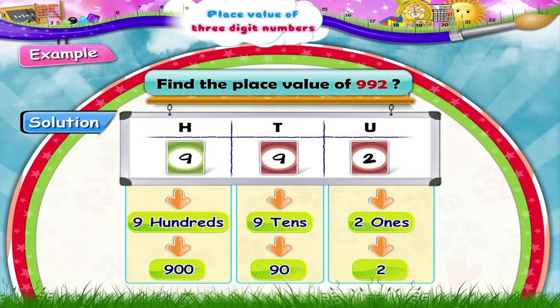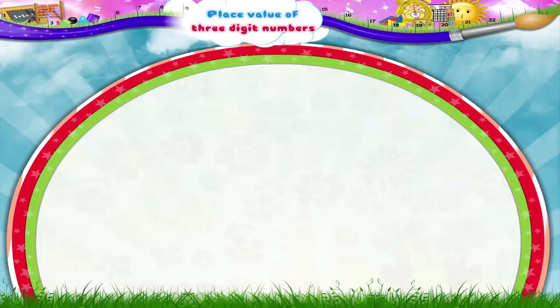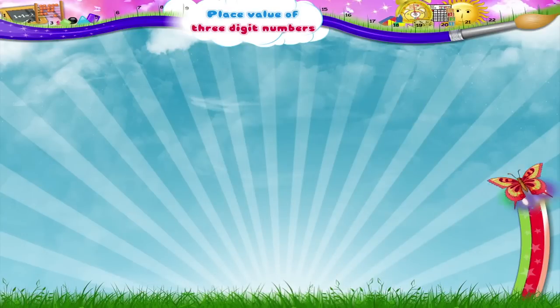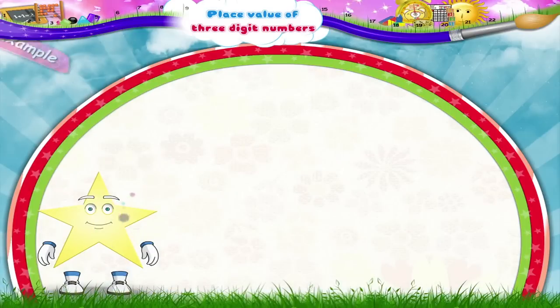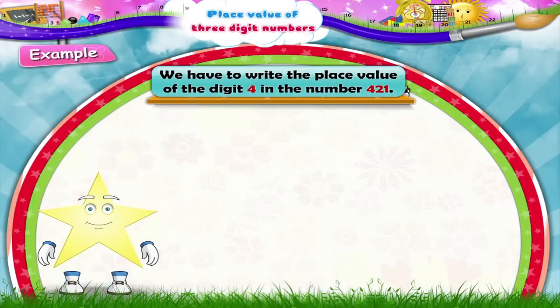So remember, Starry — the place value of a digit changes depending upon its place in the given number. Are you ready to solve some examples now, Starry? Okay, then let's start.